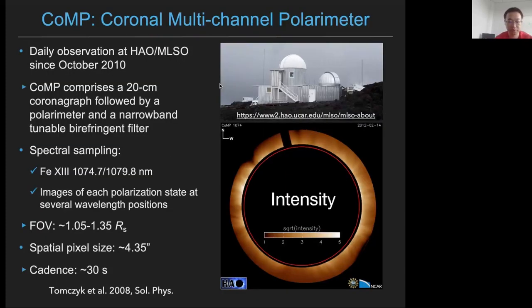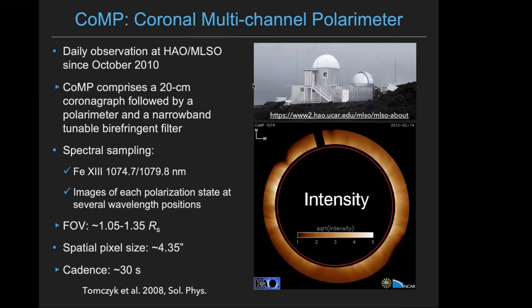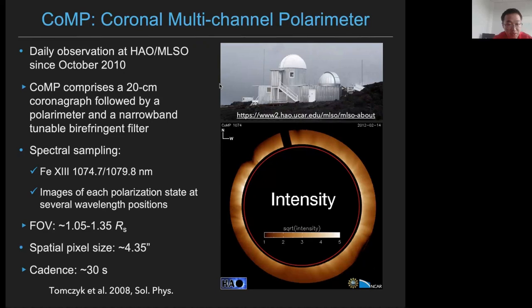CoMP is a coronagraph with a 20-centimeter aperture. Using the Fe XIII 1074 and 1079 nm infrared spectral lines, it can observe the solar corona in the range of about 1.05 to 1.35 solar radii. And it can do imaging spectroscopy and spectropolarimetry. Basically, CoMP takes images of each polarization state at several wavelength positions across the coronal spectral line profile, and we can obtain spectral parameters such as the peak intensity and the Doppler velocity from this.